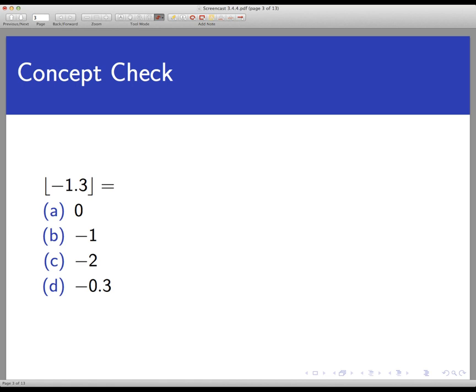So the right answer here is negative 2. The floor function takes a real number and maps it to the greatest integer that is less than or equal to the input. So that's a downward rounding. It would take negative 1.3 to negative 2 because negative 2 is less than negative 1.3. Remember that negative 2 is less than negative 1, not greater than negative 1.